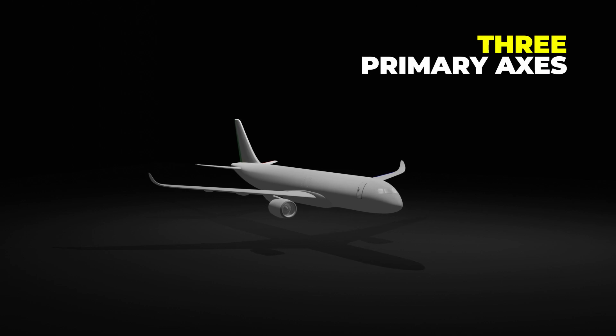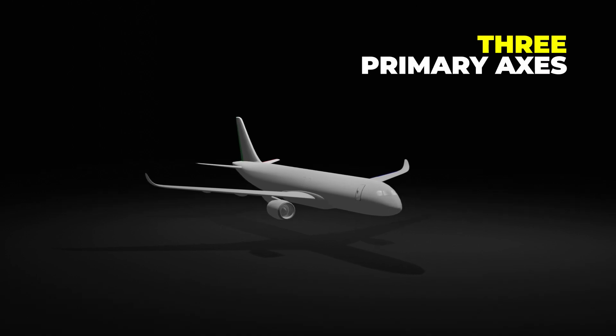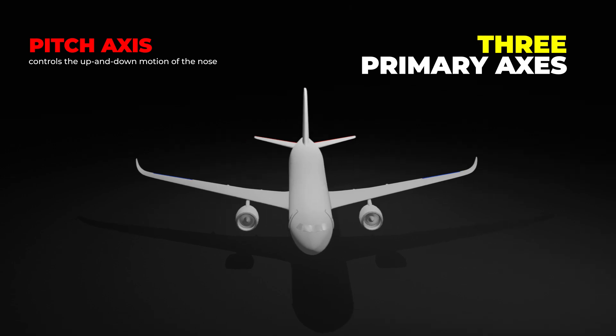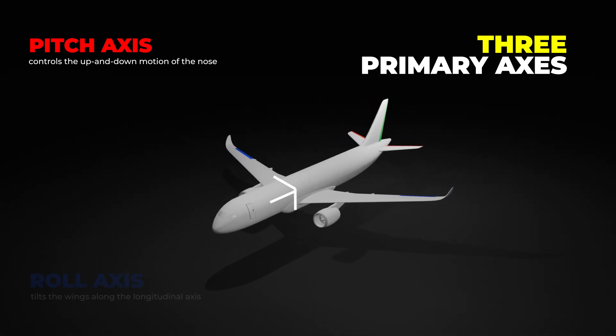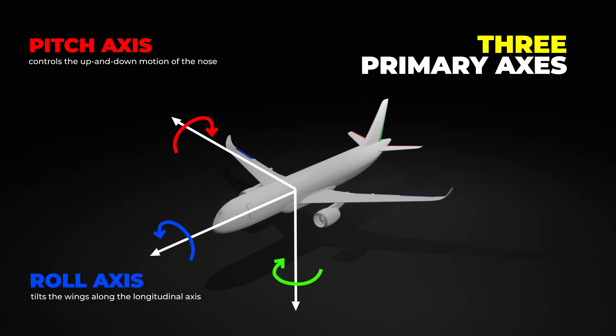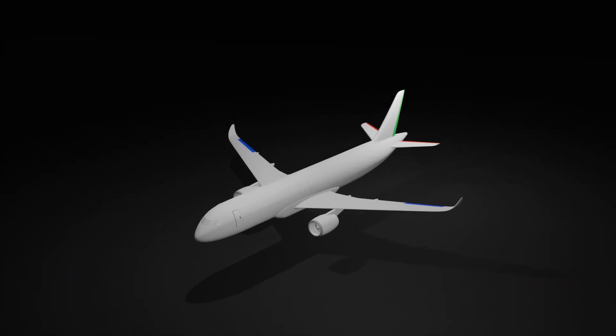Airplane controls manage movement along three primary axes. Pitch controls the up and down motion of the nose along the lateral axis. Roll tilts the wings along the longitudinal axis, and yaw turns the nose side to side along the vertical axis. These movements are achieved through a combination of primary and secondary flight controls, all designed to ensure stability and maneuverability.